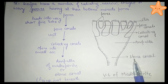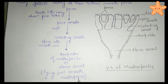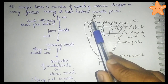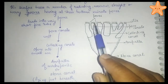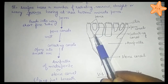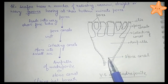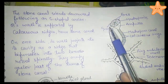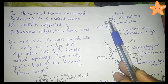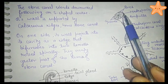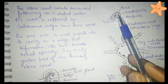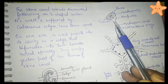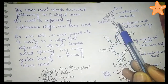The ampulla opens into the stone canal, which is present just beneath the madreporite. So water travels from the madreporite via the pores, then through the pore canals, into the collecting canal, then into the ampulla, and finally reaches the stone canal. Here in the diagram we can see the madreporite surface, the ampulla, and how water enters through the pores with cilia on the surface.